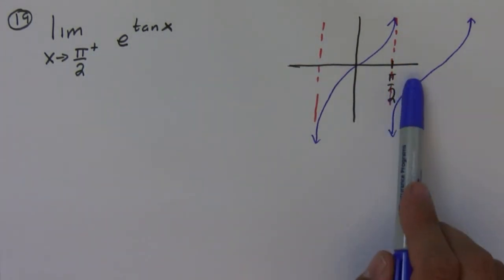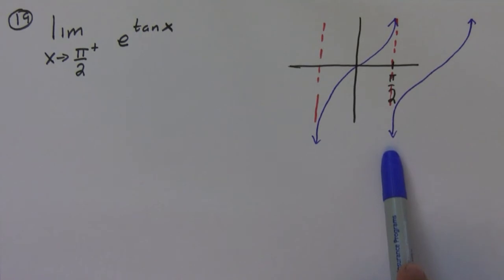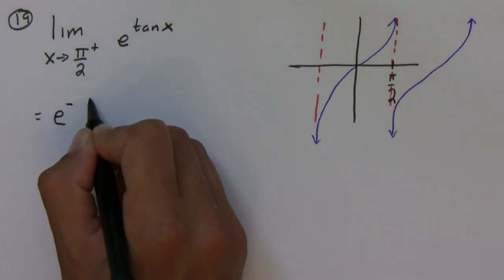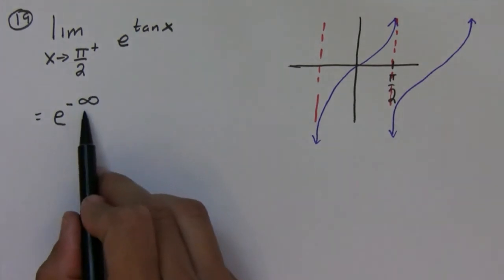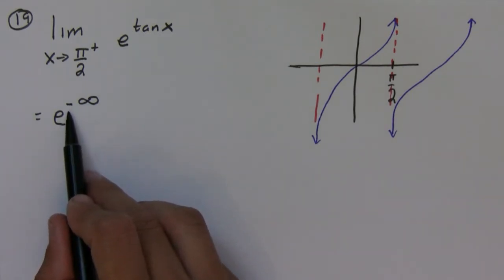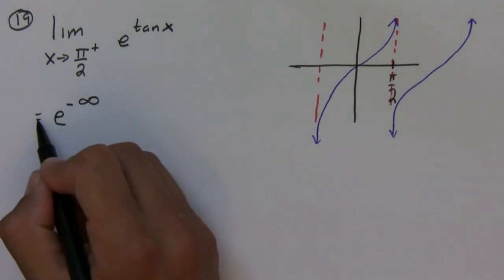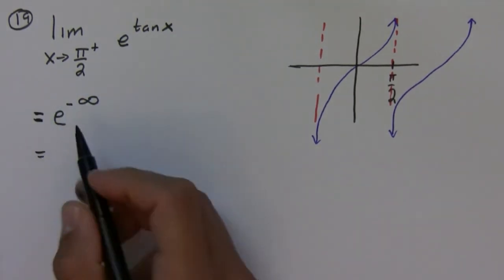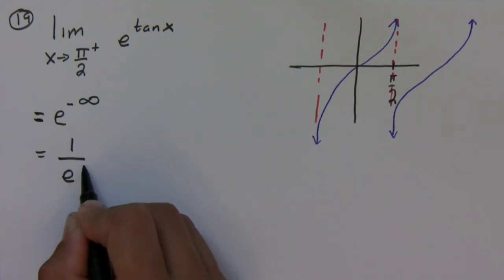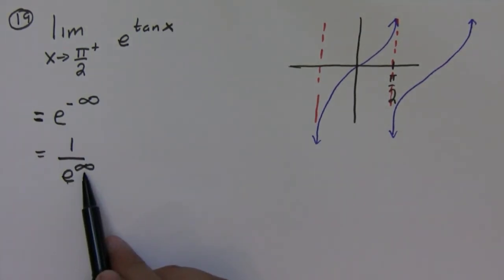If we approach π over two from the right, tangent is going down to negative infinity. So really what we're looking at is e being raised to a really big negative number. Now obviously this isn't technically correct because infinity isn't a number, so you can't really plug it in. But what you're imagining is a very big negative number, a very big negative exponent. Well, negative exponents, to make sense of them, we have to turn positive, so this guy is the same as one over e to a very big number.